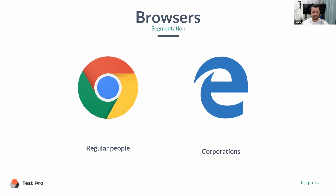You should always ask your product owner or your team: what's the most popular browser for us? Sometimes they have email lists, and the company will send you a list of your users' browser popularity.